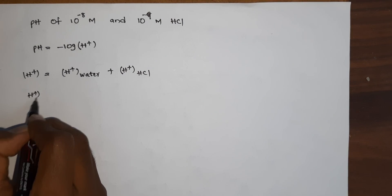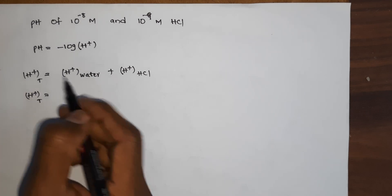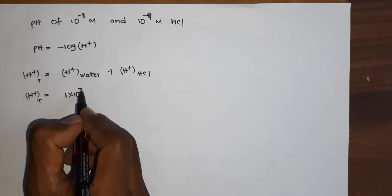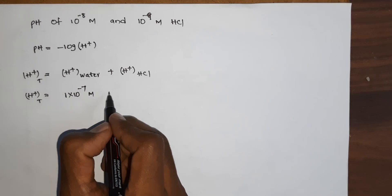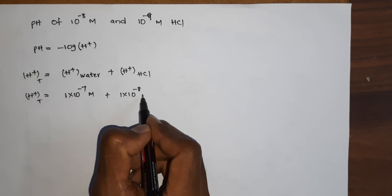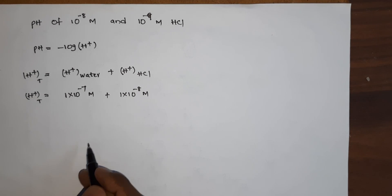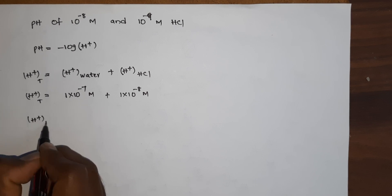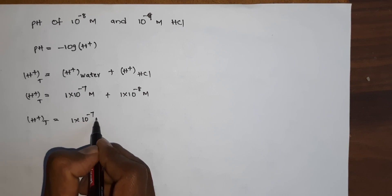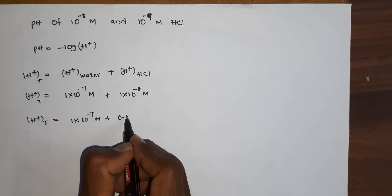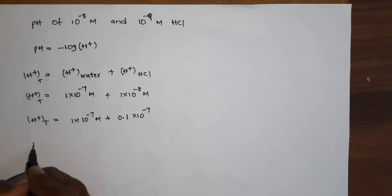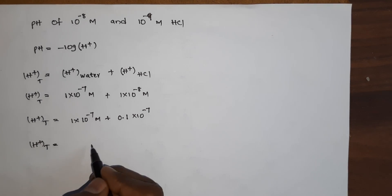So, total H⁺ concentration equals: for water at 25 degrees centigrade, 1×10⁻⁷ molar. For HCl, they have given 10⁻⁸ molar. So H⁺ total equals 1×10⁻⁷ molar plus, for this we can write, 0.1×10⁻⁷.